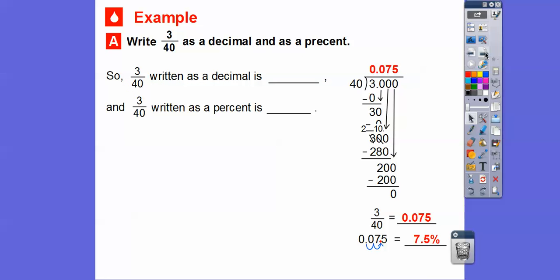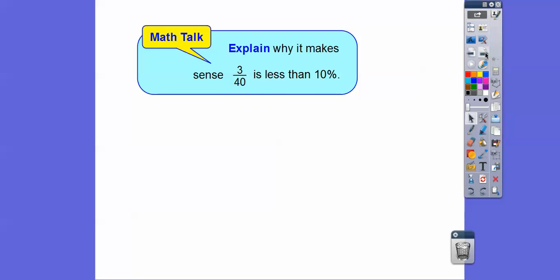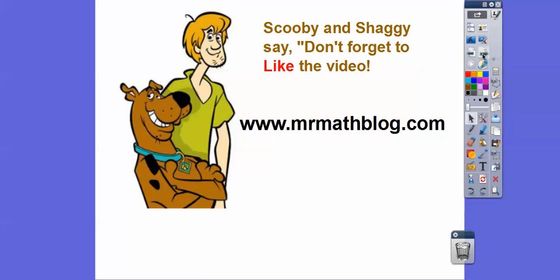So 3 fortieths written as a decimal is 0.075, and then when we change that to a percent, we just move it two places to the right, one, two, and it becomes 7.5%. So explain why it makes sense that 3 fortieths is less than 10%. Well, we know 3 fortieths is less than 4 fortieths, and 4 fortieths is 1 tenth or 10%, so since 3 fortieths is less than 1 tenth, it's going to be less than 10%. I hope that lesson makes sense, and take care.